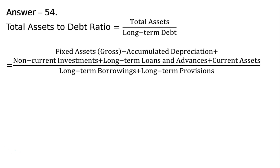This total is divided by: out of the information given, long-term borrowings by the company, plus long-term provisions payable by the company. Both are long-term debt.